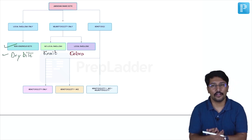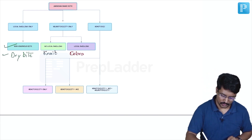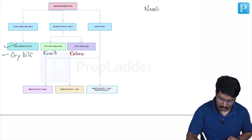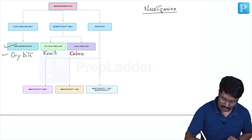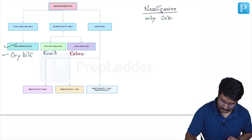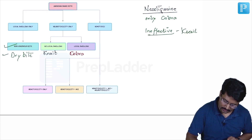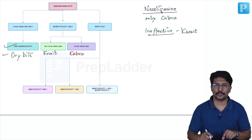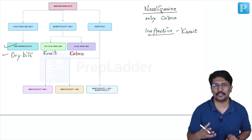Why is this differentiation important? Remember this point: neostigmine, which we use for treating neurotoxic descending paralysis, is only effective in patients with Cobra bites and is ineffective in patients with Krait bites. So this differentiation helps in taking final decisions when managing neurotoxic bites.